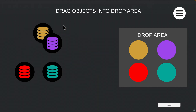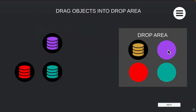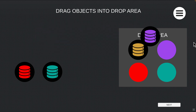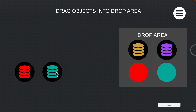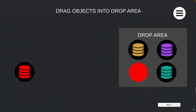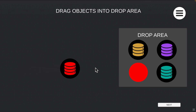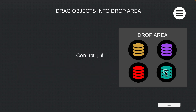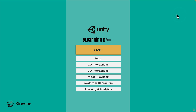Let's now take a look at a typical drag and drop interaction. Drag the coloured icons into their appropriate slots in the drop area on the right side of the screen. Keep in mind, however, that Unity has many different types of drag and drop interactions available on the Unity Asset Store. The same goes for the other interactions we have looked at so far. The Unity Asset Store is one of Unity's biggest features.